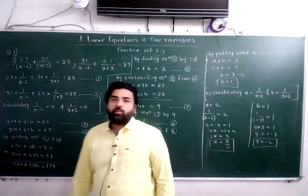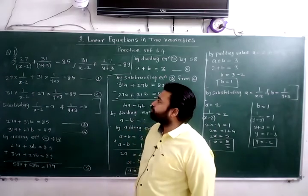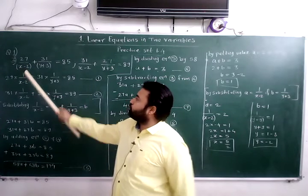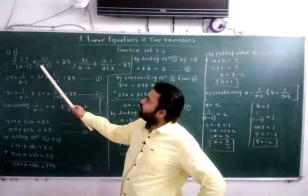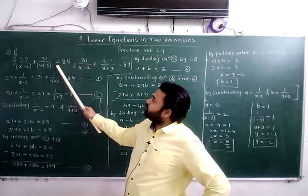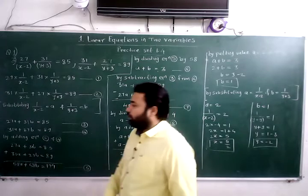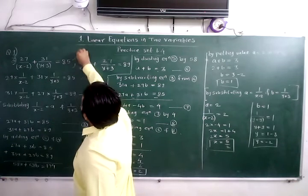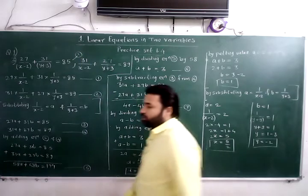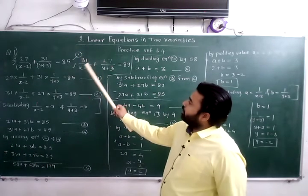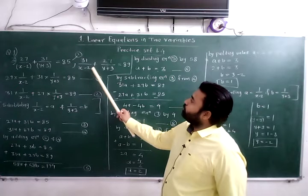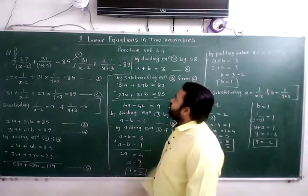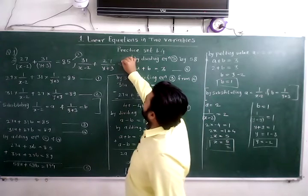We will talk about the third problem. Let's take a look at the equation. The first equation is: 27 upon (x minus 2) plus 31 upon (y plus 3) is equal to 85. The second equation is: 31 upon (x minus 2) plus 27 upon (y plus 3) is equal to 89.